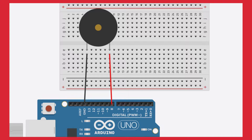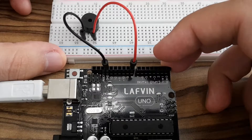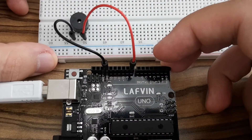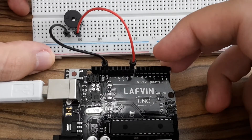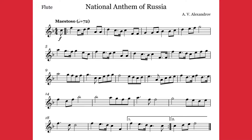Pay attention to connecting pin 8 to the positive terminal — it's an important thing. And let's start programming the anthem. This is the National Anthem of Russia, a version for flute, and now I'm going to show you how to rewrite it to programming code.